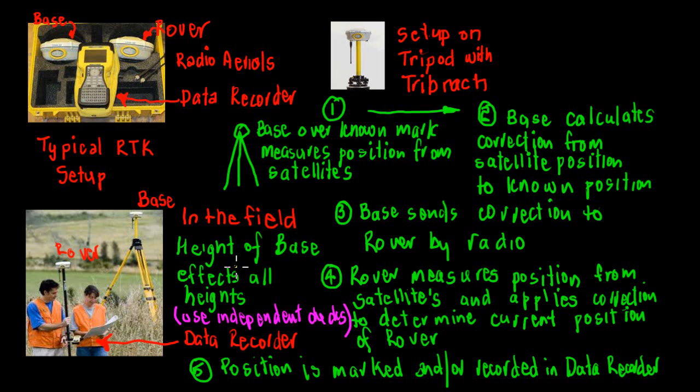This is all great stuff. We have the data recorder and the data recorder can record the position of the rover at any time, or alternatively we can set the data recorder to stake out a particular position. That enables us with the rover to move to a position where we want to be, where we can set out a peg or a stake or the height and what have you.